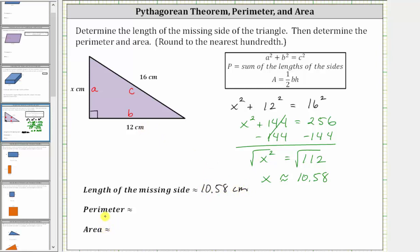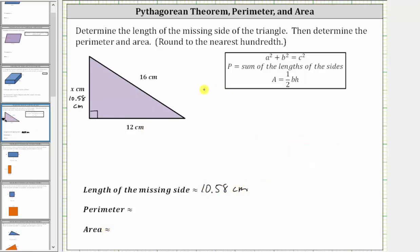And now let's determine the perimeter and the area. The perimeter is a distance around the outside of the triangle, so if we think of walking around the triangle, the perimeter is approximately 10.58 centimeters plus 16 centimeters plus 12 centimeters. The perimeter is approximately—we're using the approximate symbol here because 10.58 is a rounded value.